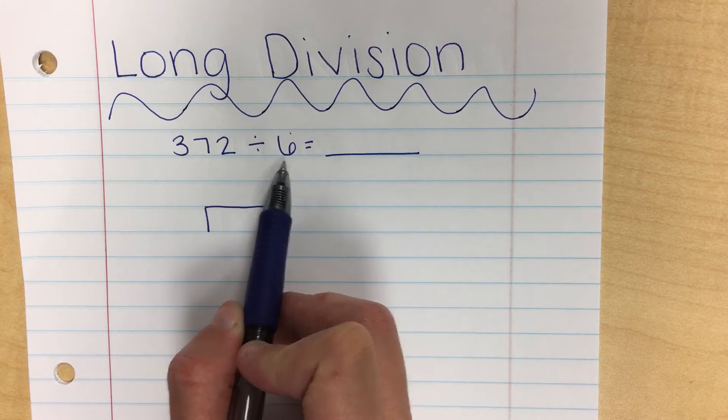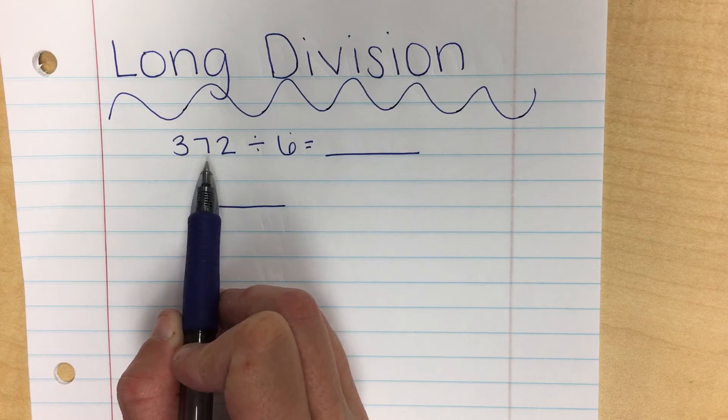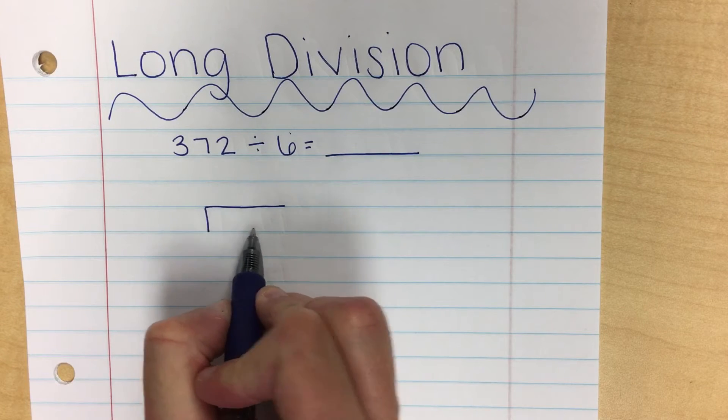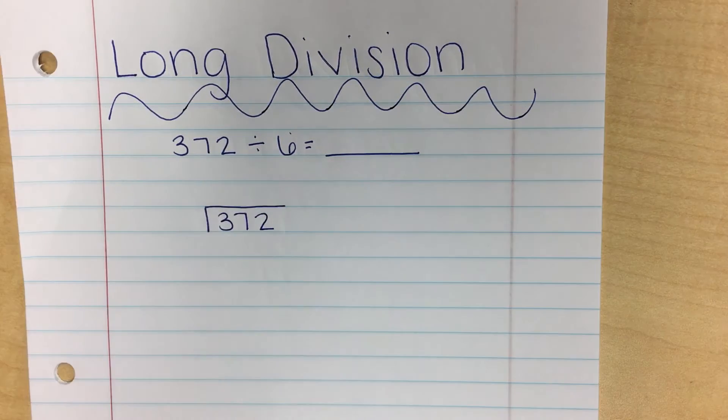Our larger number is 372, so we call that number the dividend, and we're going to put that right here in the din. So the dividend goes in the din.